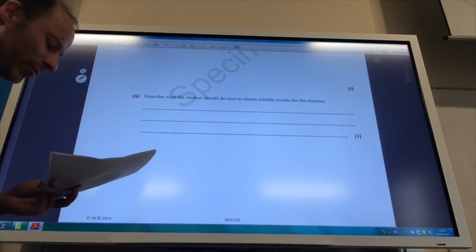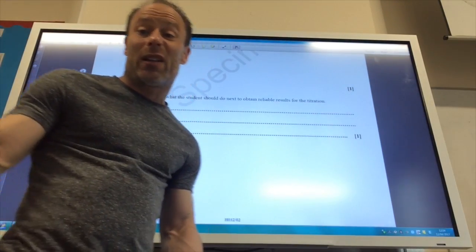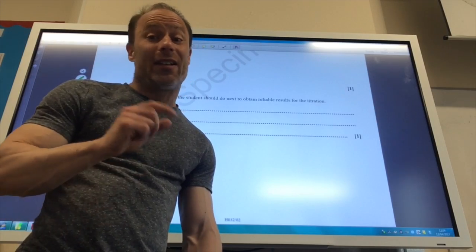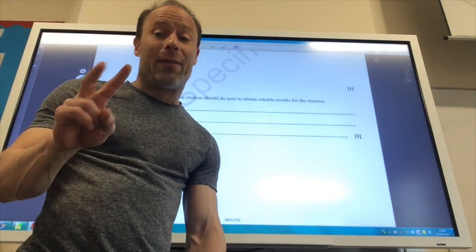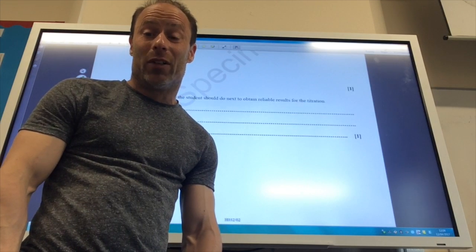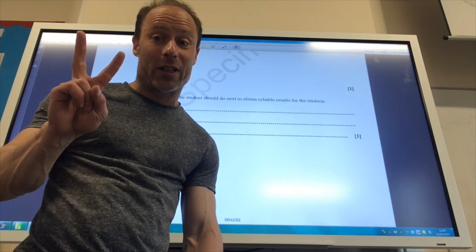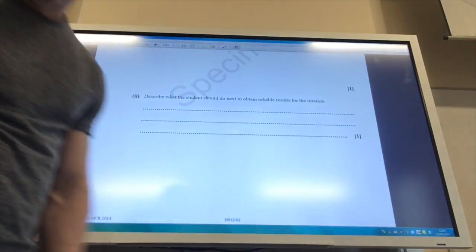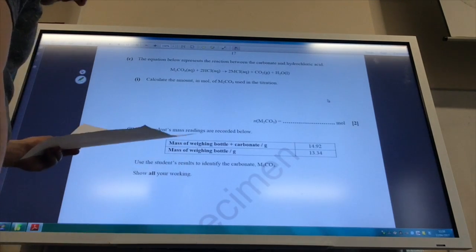Describe what the students should do to obtain reliable results for the titration. You keep doing a titration until you get two titers within 0.1 of each other, and then you take the average reading of your titers. So repeat until you get two titers within 0.1 of each other and then take the average.